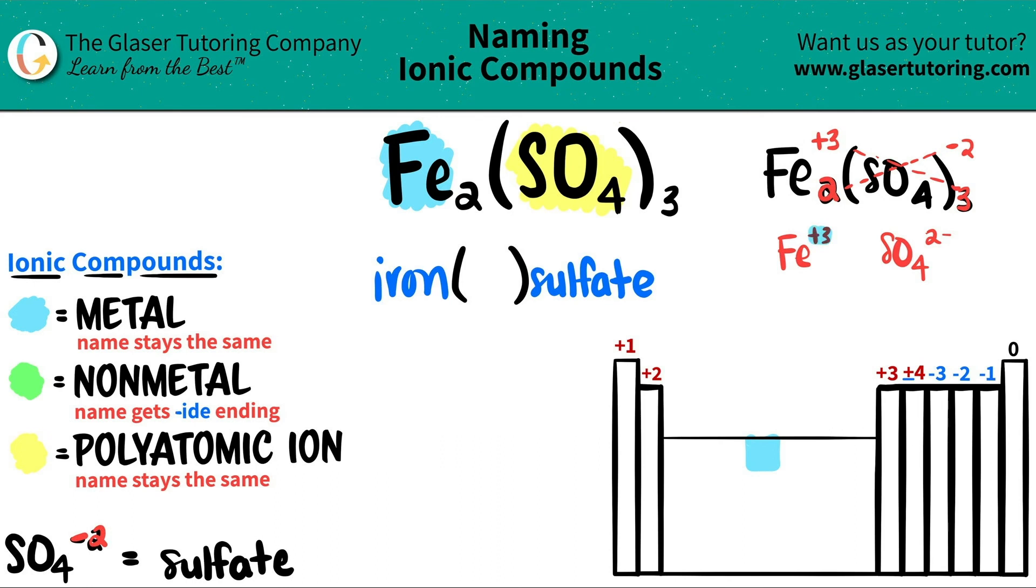So I put a three here. The Roman numeral is always the charge of the metal. And now we are finally done. So Fe₂(SO₄)₃ is iron(III) sulfate.